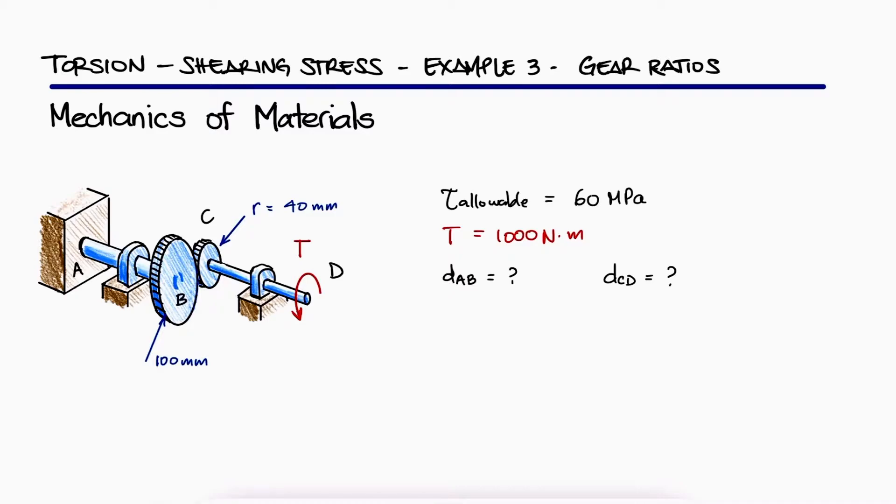If we want the shearing stresses not to exceed the maximum allowable shearing stress, and we know that the torsional shearing stress expression is always 16T over pi D cubed for a solid rod, like we showed during examples 1 and 2, links below.